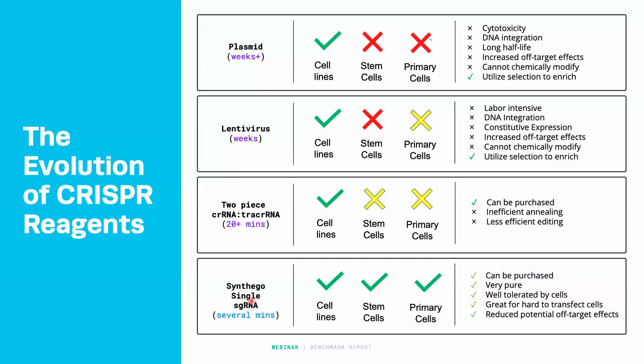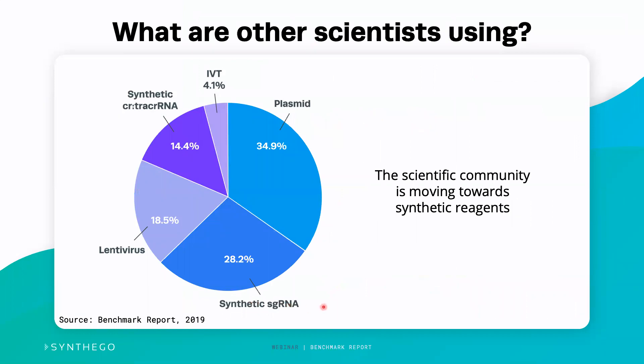So what are other scientists doing in the CRISPR space? As part of the benchmark report, we looked at what other scientists were using. We found that the scientific community is largely moving towards synthetic reagents. When we surveyed the field a couple of years ago, about 50% of customers — approximately five years ago — were using plasmid. However, this has now shifted to only about 35% using plasmid, whereas synthetic CRISPR tracrRNA and synthetic single guide RNA are growing segments. People are switching away from plasmid mostly due to the utility of synthetic guide RNAs, which can be transfected in many cell types with much higher efficiencies while increasing the accuracy of the edit and reducing off-targets.